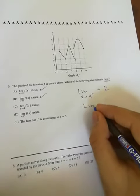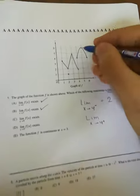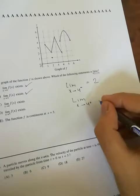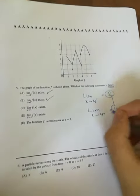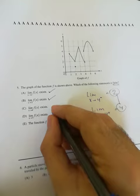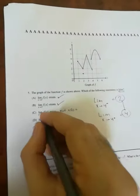And lim as x approaches 4 from the right side, with approach 4, it is equal to 4. Since they are not equal to each other, this limit does not exist. And that is our answer.